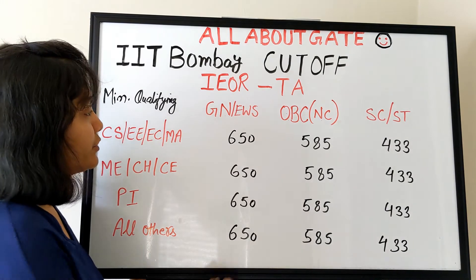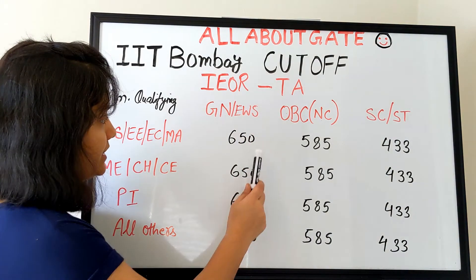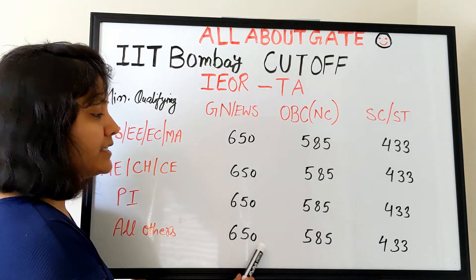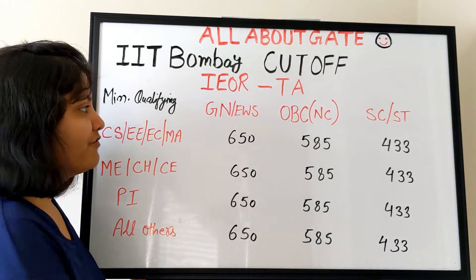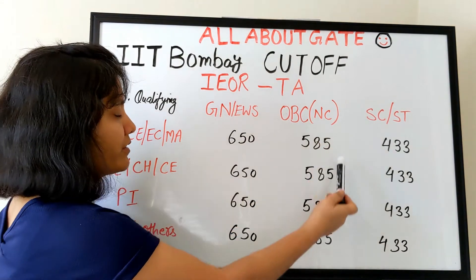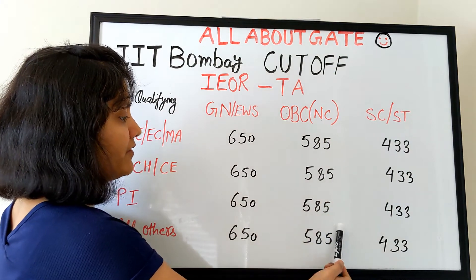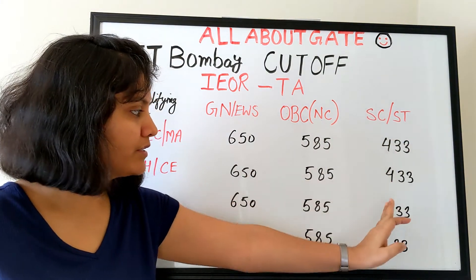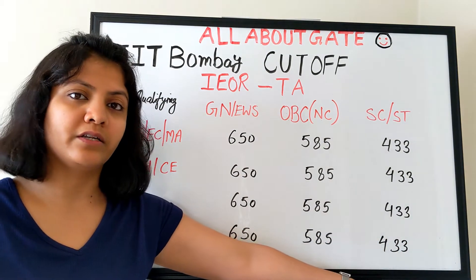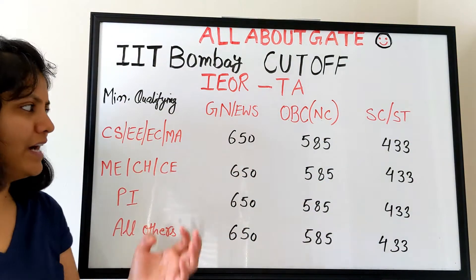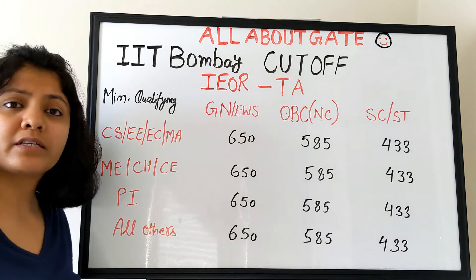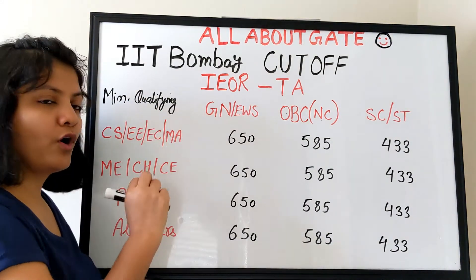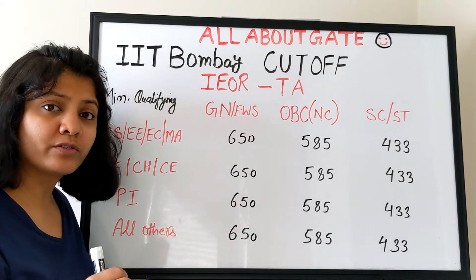For the General category, the cutoff is 650 across all branch categories. For OBC Non-Creamy Layer, it is 585. For SC/ST, it is 433 across all categories. You might wonder why the same GATE score is listed four times — it is done intentionally to show that IEOR used to put different cutoffs based on the branch, not just the discipline of the GATE exam.